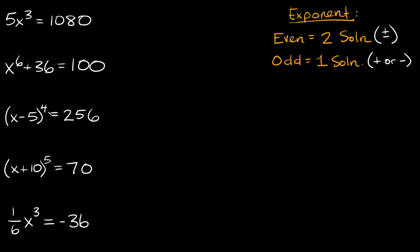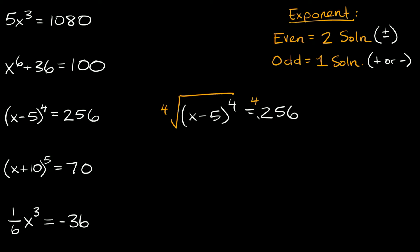Next is the third one: (x minus 5) raised to the fourth is equal to 256. We have an even exponent so we'll have two solutions. In order to get rid of this fourth exponent, we're going to take the fourth root of both sides. Those cancel out so we're left with x minus 5, and that equals the fourth root of 256, which is equal to positive or negative 4.